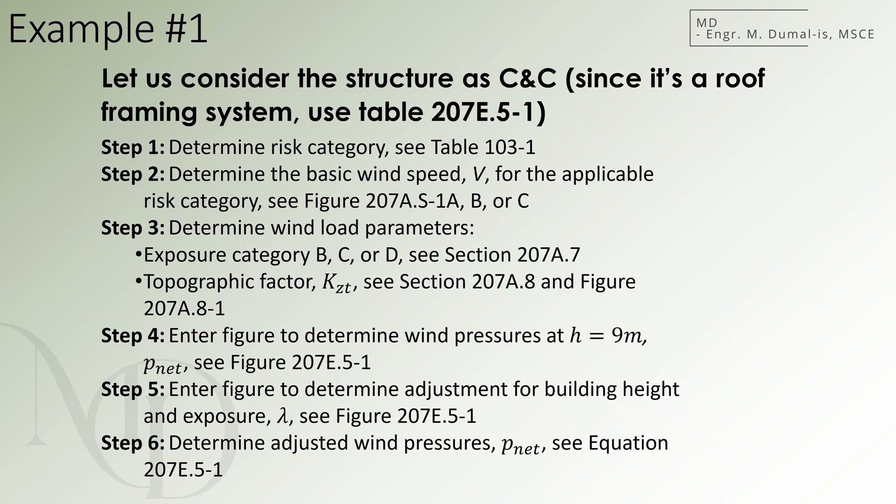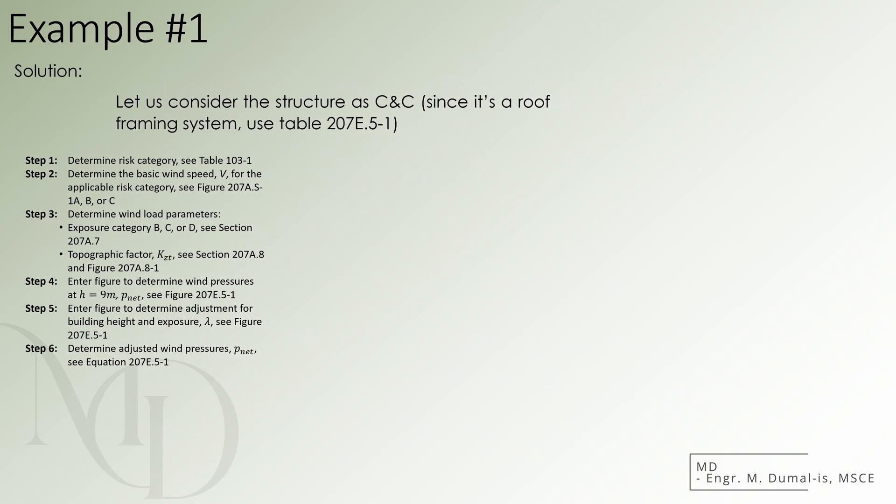Now, as stated in Table E.5-1, there are 6 steps to follow. First, we determine the occupancy category of the building. Second, we identify the applicable wind speed for the site. Third, we establish the other wind load parameters. Next, we solve for the Pnet9 value. And finally, we scale the pressure using the appropriate adjustment factors. So, let's start the process.